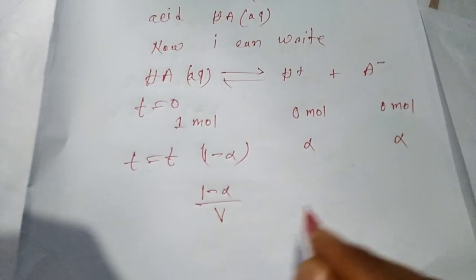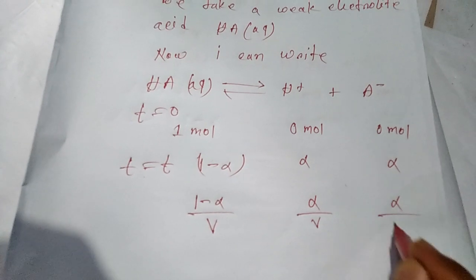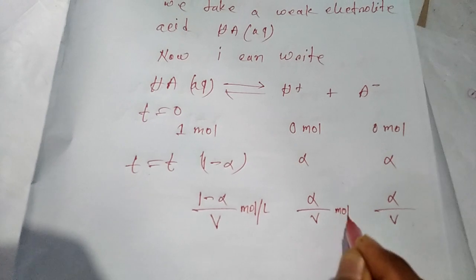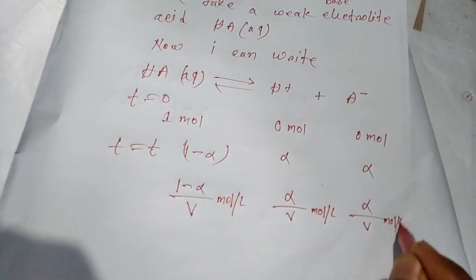Alpha by V, alpha by V, alpha by V. Mole per liter, mole per liter, mole per liter.